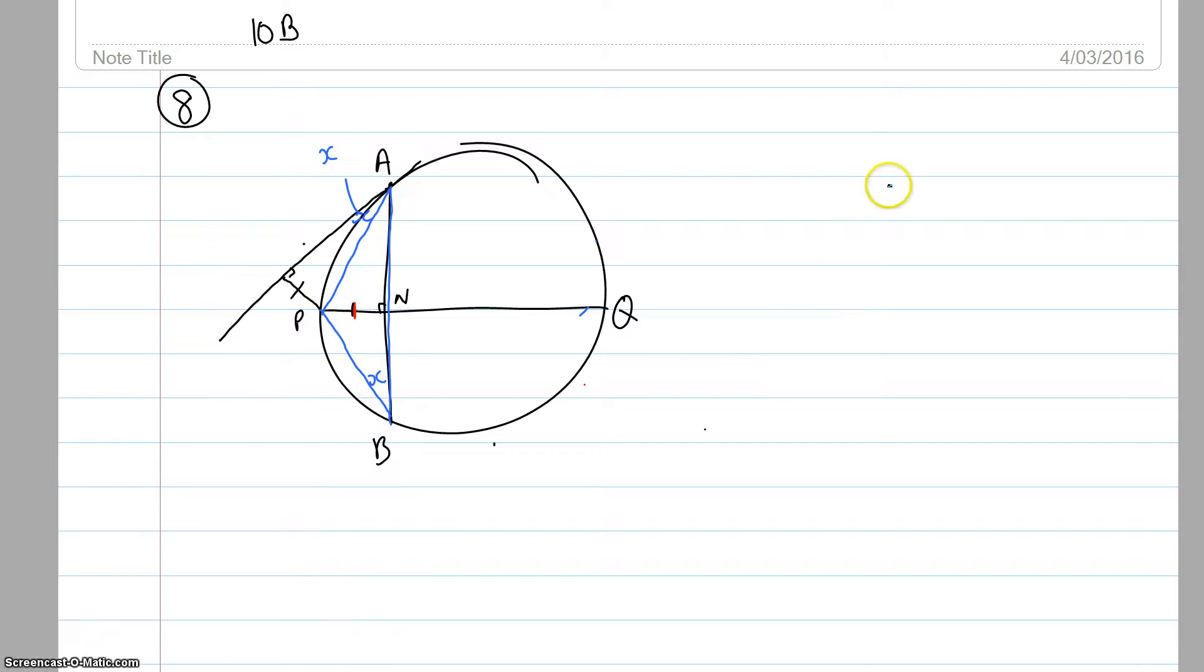Let me draw that triangle over here so we can see a little bit better. So we've got P here, N here, A here and B there, and these sides are obviously the same.